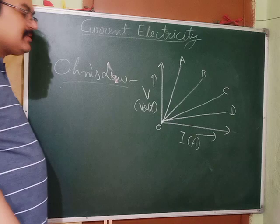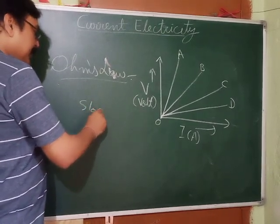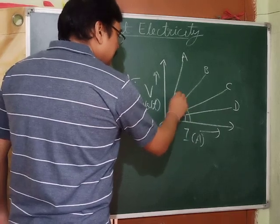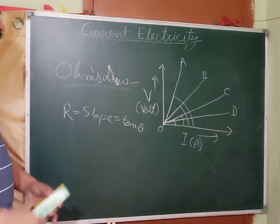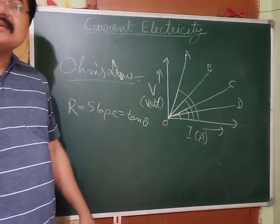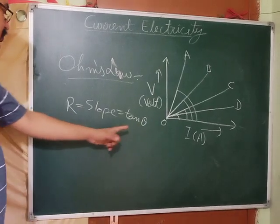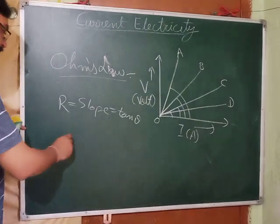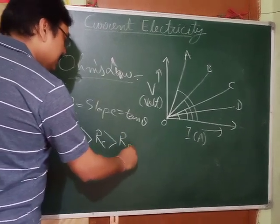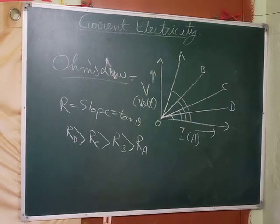If there are multiple conductors A, B, C, D shown on the same V-I graph: whichever has the smallest angle with the x-axis has the smallest tan-theta and therefore least resistance. Whichever has the largest angle has the most resistance. For example, the increasing order of resistance would be: D, C, B, A.